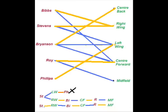Starting with Stevens, Stevens now plays right wing, and right wing has taken off Bibbs. Now Bibbs is free to play centre forward, so we put Bibbs in centre forward. The current player for centre forward is Roy, so we're going to take Roy from centre forward and finally place Roy in the midfield.